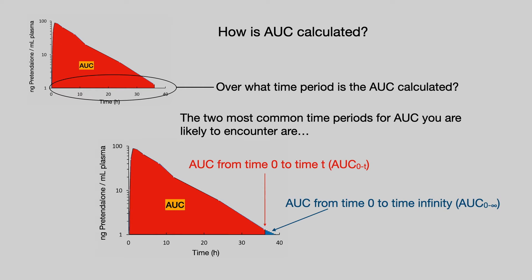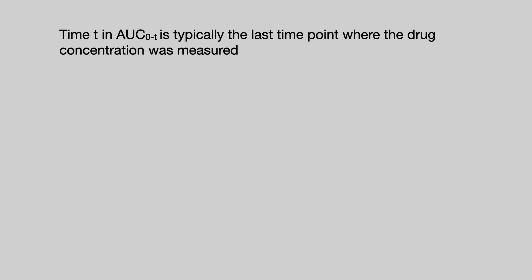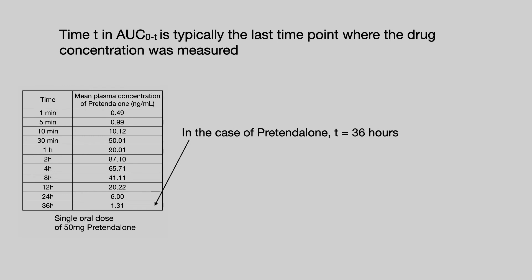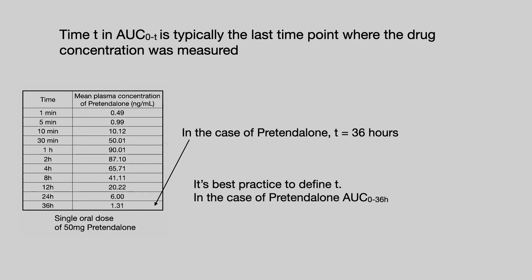Time T is usually the last time point where the drug concentration was measured. If we look at the oral data for Pretendalone, the last time point measured was at 36 hours. So T in this case is 36 hours. It's best practice to define T, and in the case of Pretendalone we can say that's AUC naught to 36 hours — it is a more precise definition.